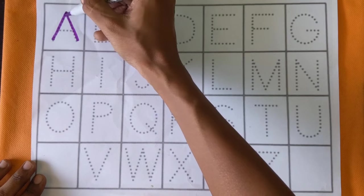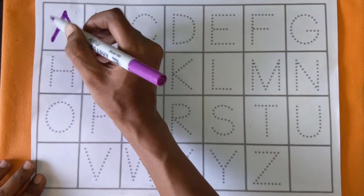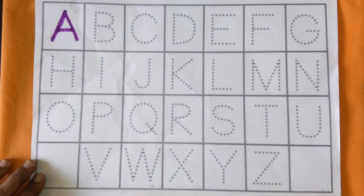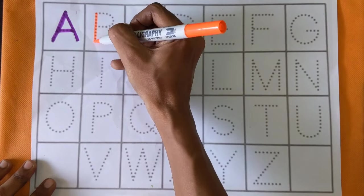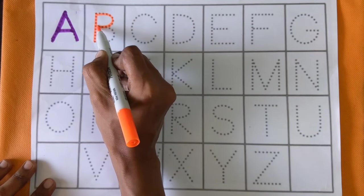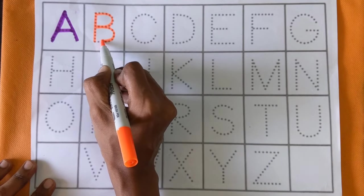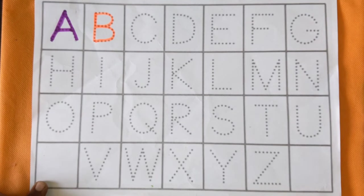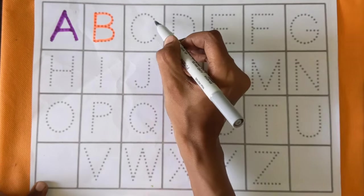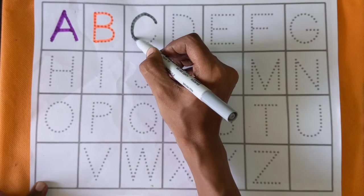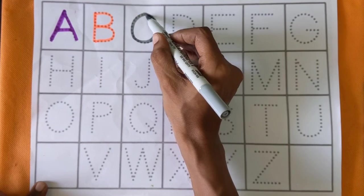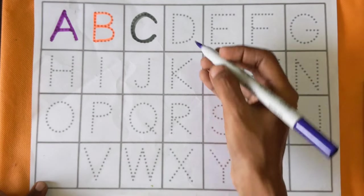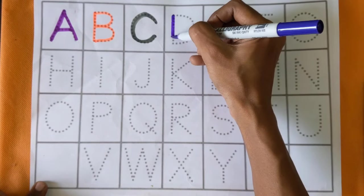At first, this is A. A for angel and A for artist, purple color. Next is alphabet B. B for butterfly and B for basket, orange color. Next is alphabet C. C for cow and C for candle, gray color.